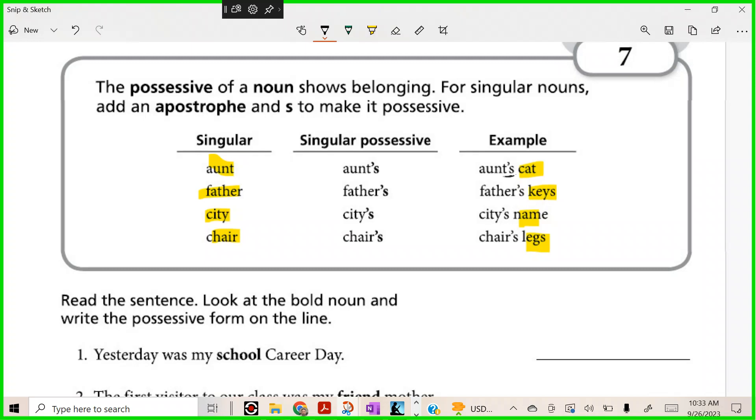It would be my aunt's cat - what do we add? Apostrophe s, because it's one singular aunt. My father's keys, what do we add? My city's name - whose name is it? My city's. The chair's legs.